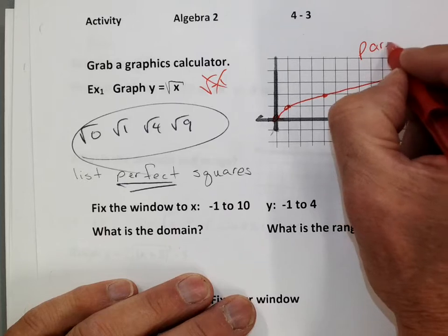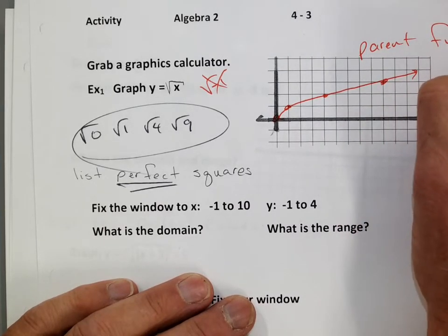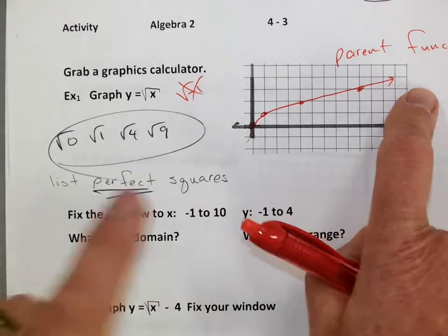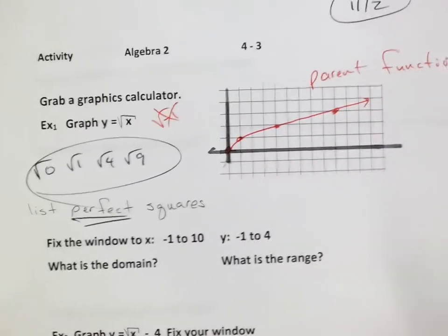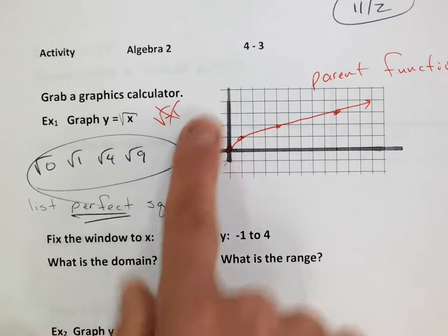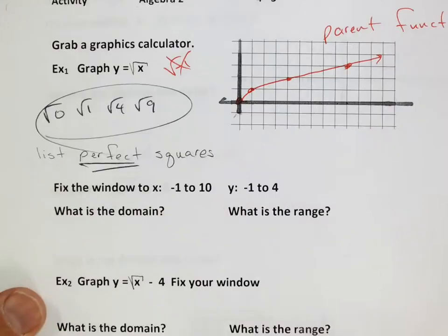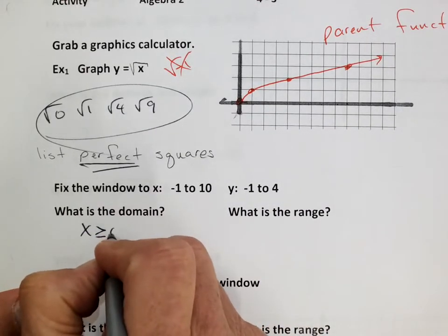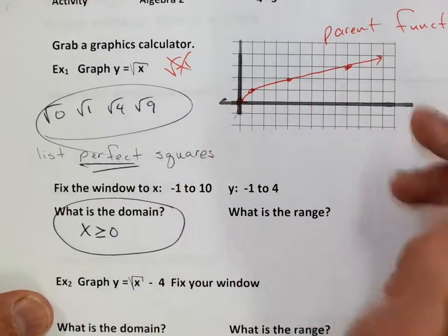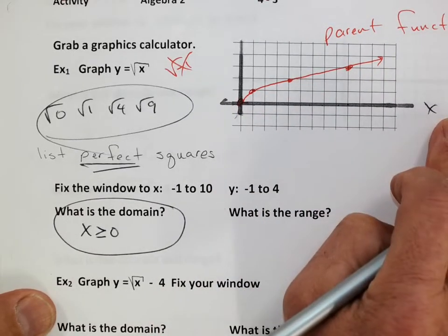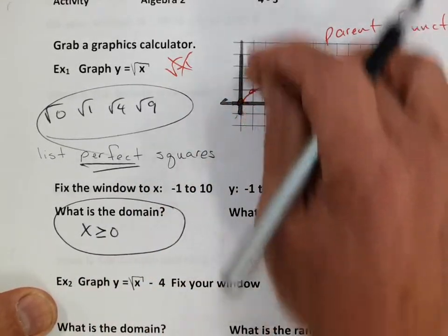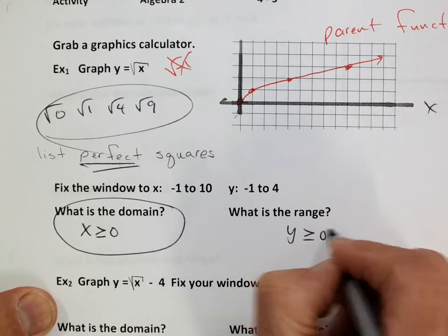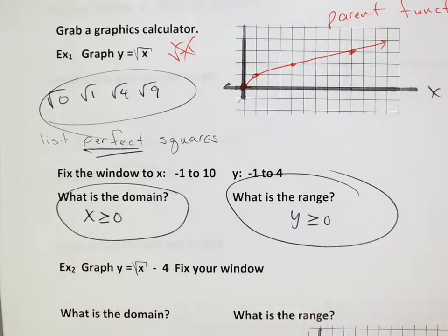So that's my parent function — the most basic form, just the square root of x. We'll move it around and do other things to it later. Now, domain and range: there are no values back here on the left, so the domain is not all real numbers. The domain is x is greater than or equal to zero — starts at zero and goes positive on the x-axis. The range: you can't take the square root of a negative number so you won't have a negative answer. The range is y is also greater than or equal to zero.